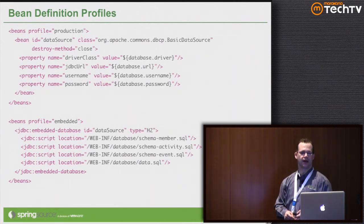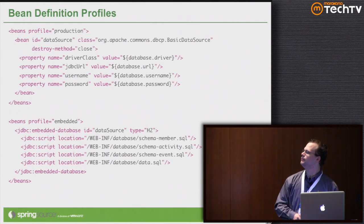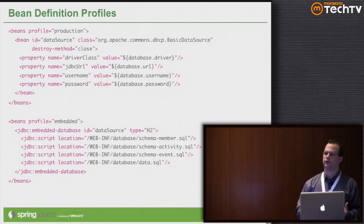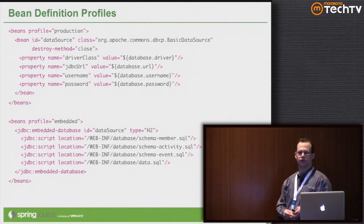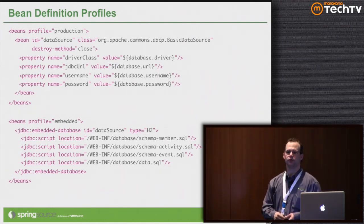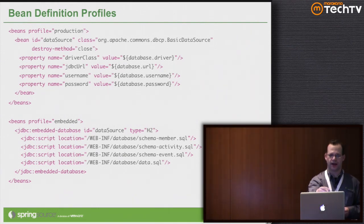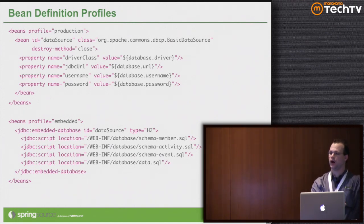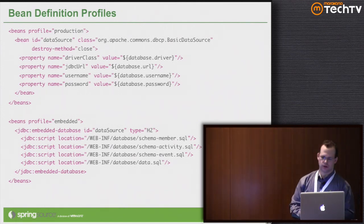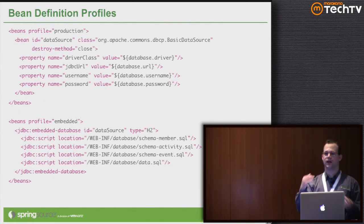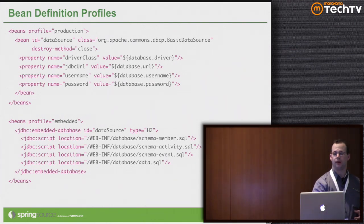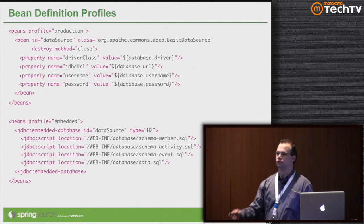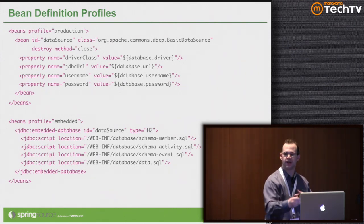In practice, it means you have an Environment object you can inject and ask questions like: I need a property resolved against a custom property SPI. That's the PropertyResolver interface. It also means you can ask what profile your Spring context is running in — am I running in test, production, or dev? You can ask questions about that through the environment object.